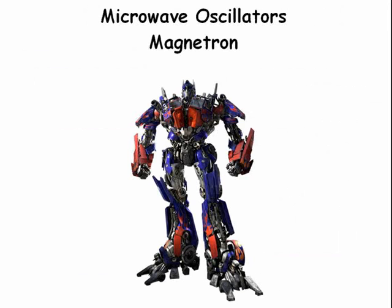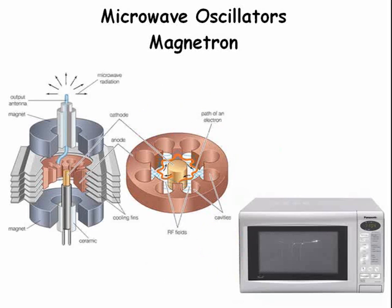Microwave ovens use a magnetron as their high-power frequency source. A magnetron tube is a diode: the anode is formed into a resonant cavity that surrounds the cathode. A strong external magnet creates a magnetic field inside the tube. Magnetrons are self-oscillating at a frequency determined by the dimensions of the anode.